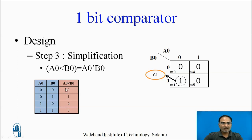For the third output, a0 less than b0, the truth table shows only one minterm. After placing it in the 2-variable K-map, no pairing is possible, so we have a single group. The equation for a0 less than b0 is a0'·b0.